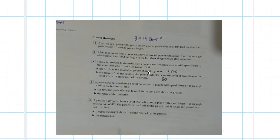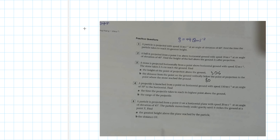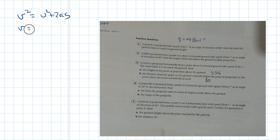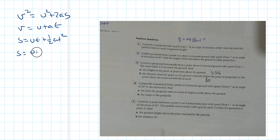This video goes through some practice projectile questions. The first step is to write out the SUVAT equations needed: v squared equals u squared plus 2as, v equals u plus at, s equals ut plus half at squared, and s equals u plus v over 2 times t. These are given on the formula sheet.